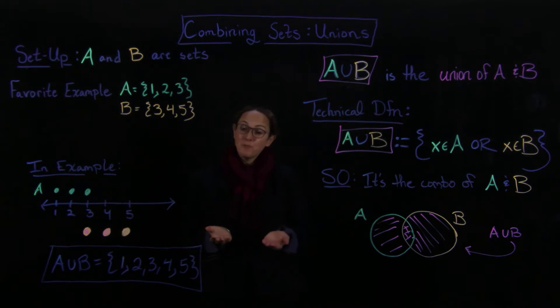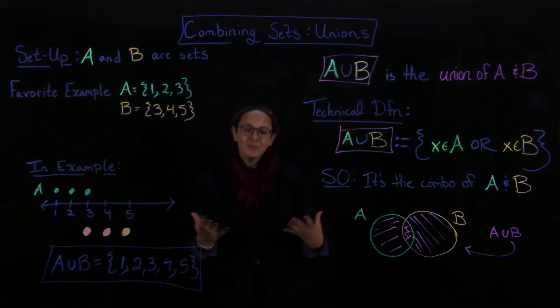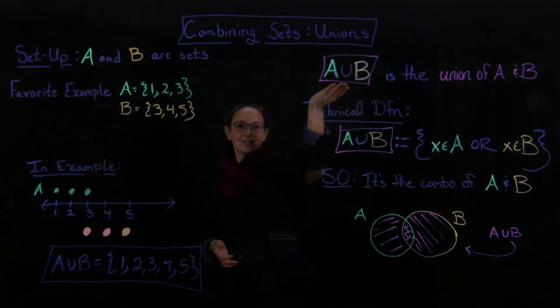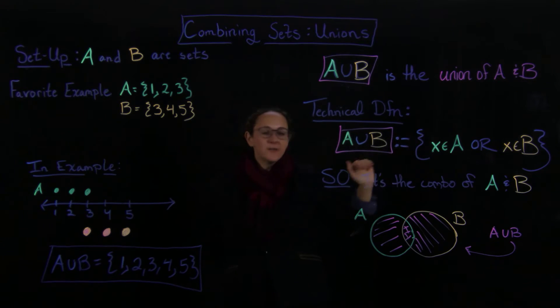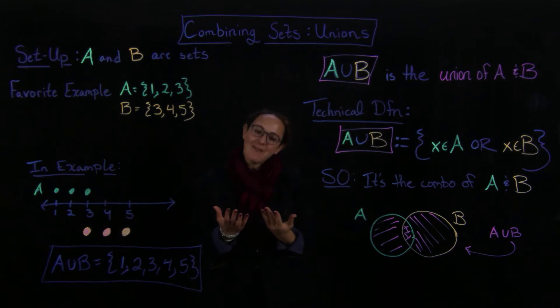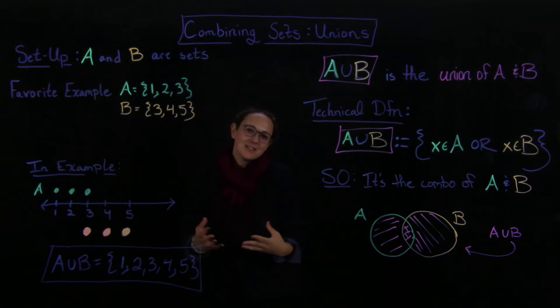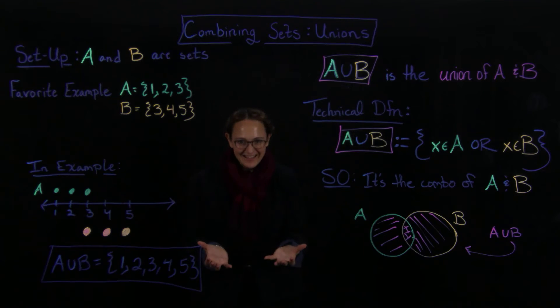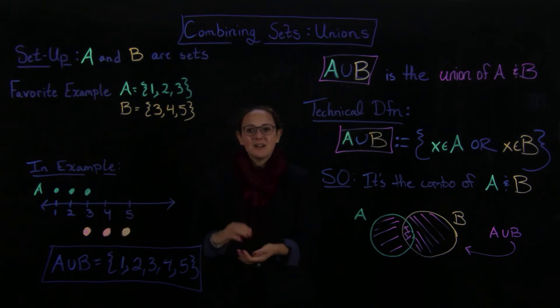So in this lecture we talked about how you kind of combine sets together, and the symbol for that is a U for union. This is kind of like the formal definition of it, but really you're just including everything that's in A and you're including everything that's in B. I kind of think of it as you just kind of dump all them into the same bowl, and anything that ends up in the bowl is in the union.